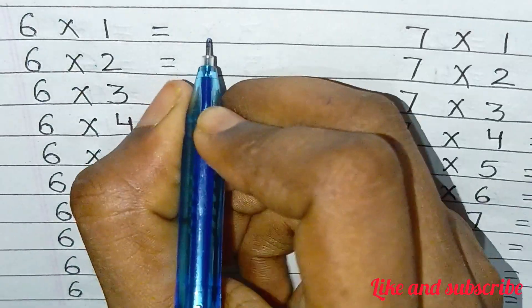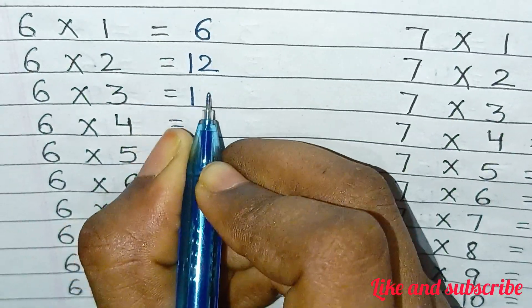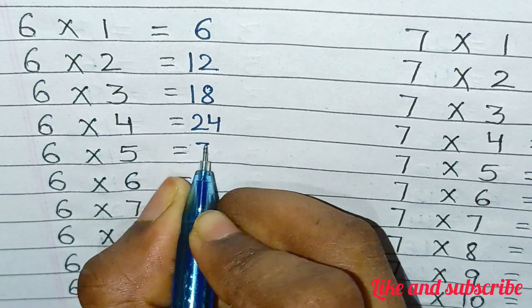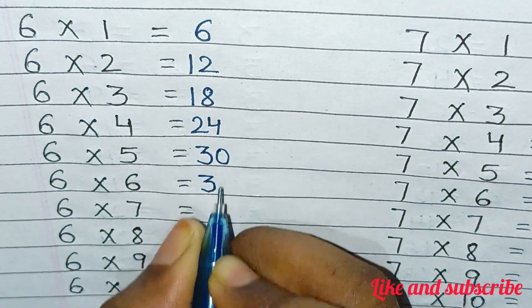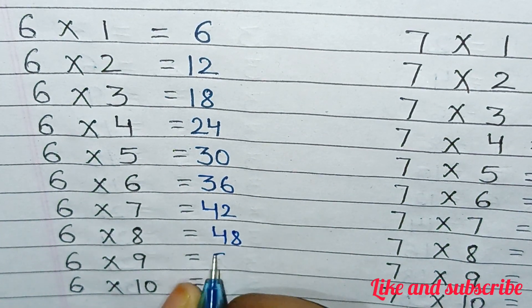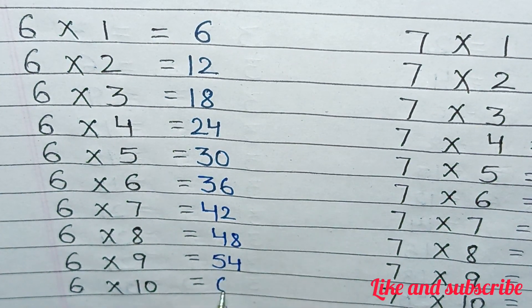6×1=6, 6×2=12, 6×3=18, 6×4=24, 6×5=30, 6×6=36, 6×7=42, 6×8=48, 6×9=54, 6×10=60.